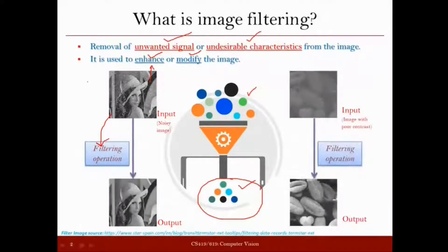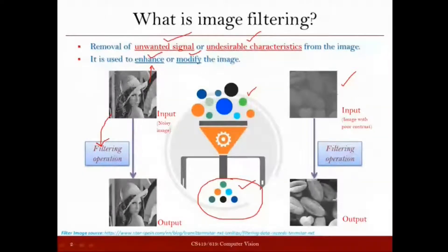Similarly, in this case, let us say we have this input image. We find that this input image has issues with respect to contrast — whatever objects you have here are not very clearly visible and you want to enhance them, improve the contrast of the image. So again, this can be done by performing a filtering operation where we remove the unwanted signal or unwanted characteristics from the image and enhance it, as you see in the output.